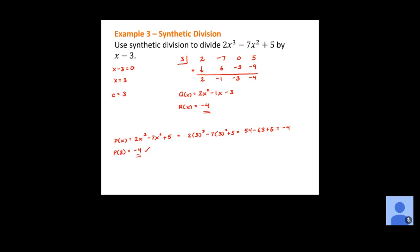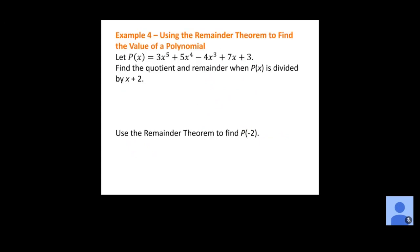The real usefulness is that when we get a remainder of zero, it means zero is the function value at that point — so that value must be a zero or x-intercept of the graph. Moving forward, we're looking for values that give remainders of zero. Now, let's do example 4: we want to find the quotient and remainder, then use the Remainder Theorem to find P of negative 2. We can use synthetic division since we have x plus 2. What value goes in our box? Negative 2 — always the opposite.